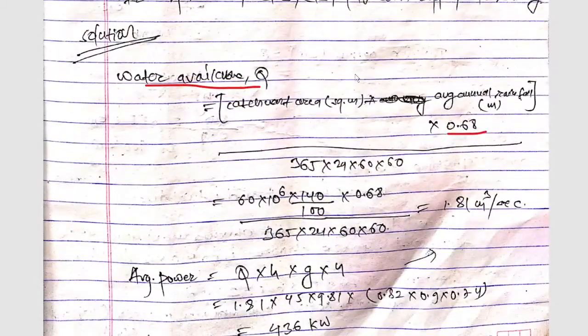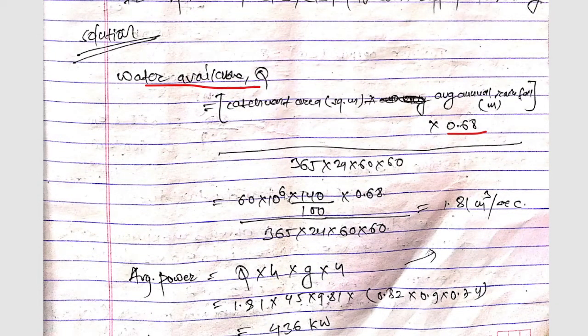So catchment area is given as 60 square kilometers, so 60 into 10^6 into average rainfall is given as 140 centimeters, so 140 upon 100 into 0.68 upon 365 into 24 into 60 into 60 will get here 1.81 meter cube per second. So this is our Q means discharge.